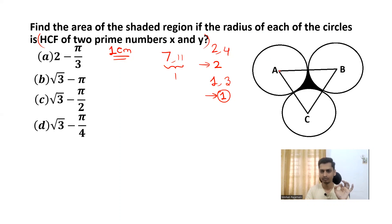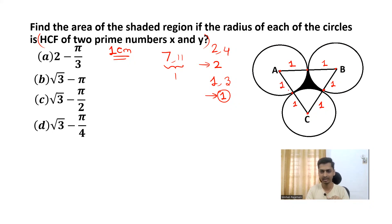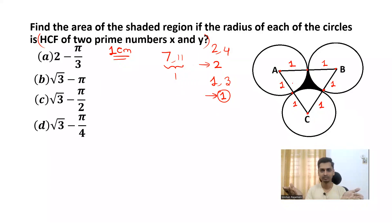From the center of a circle to its circumference, we call it the radius — and it is 1 cm for each circle here. Now you can see a triangle: an inverted triangle touching the center of each circle. We can say it is an equilateral triangle because all sides are equal.